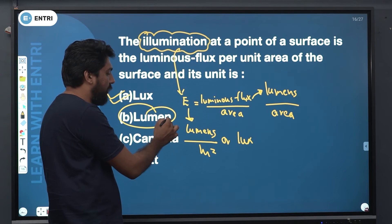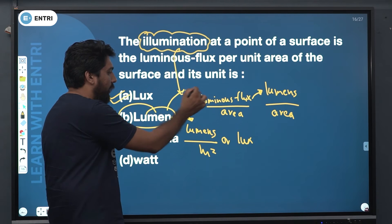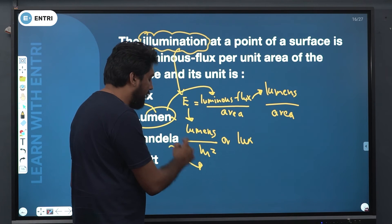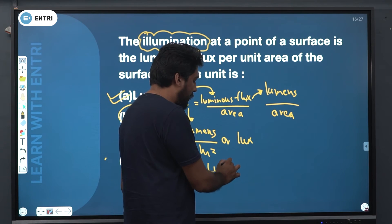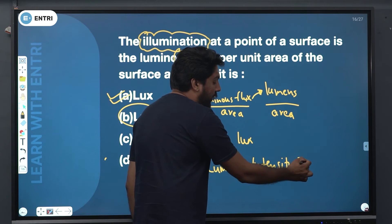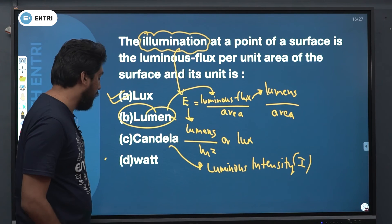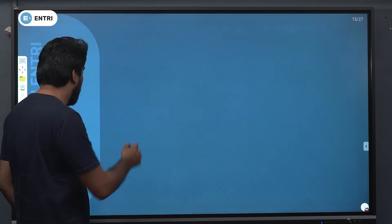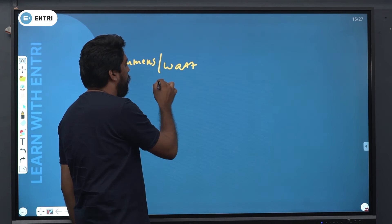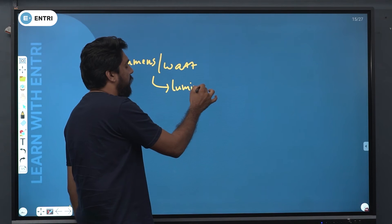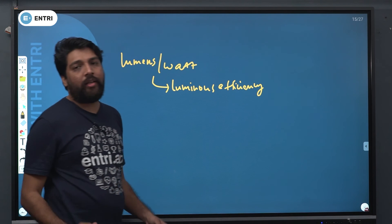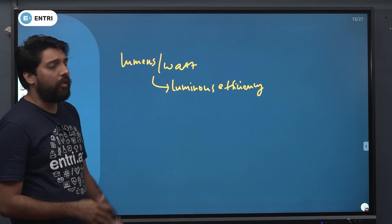Luminous flux is measured in lumens. Candela means luminous intensity. Lumens per watt is luminous efficiency. So luminous efficiency is defined as lumens per watt.